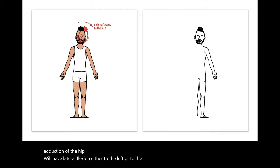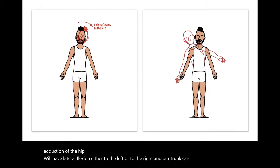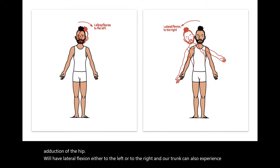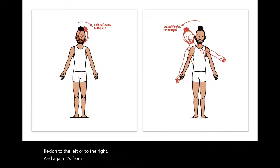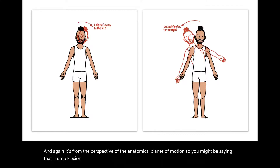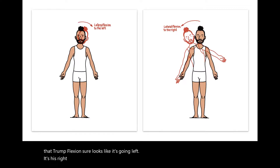The trunk can also experience lateral flexion to the left or to the right. Remember, it's from the perspective of the anatomical planes of motion — so trunk lateral flexion that looks like it's going left is actually his right, not your right.